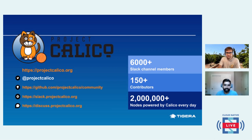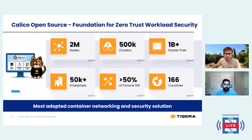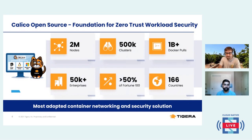In the next slide, I'll show you the depth and distribution of Calico, so feel free to join this community. We'd be excited to have you on our Slack channels where you can discuss with other members about troubleshooting or any Q&A. As you can see, it's one of the most widely adopted CNI and security solutions for Kubernetes. We are powering more than 2 million nodes across 166 countries, with a billion-plus Docker pulls for Calico, and it powers about 500,000 clusters across 50,000 enterprises.